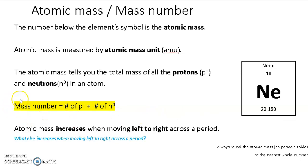Now, this equation is very important, and you need to know this for all the calculations: mass number equals the number of protons plus the number of neutrons. Atomic mass increases when moving left to right across a period, just like atomic number, which also increases from left to right across a period.